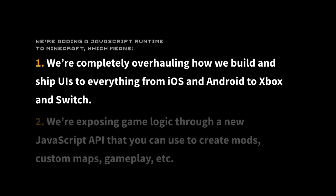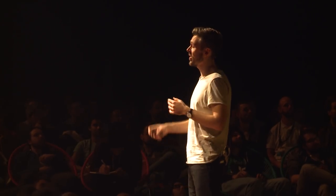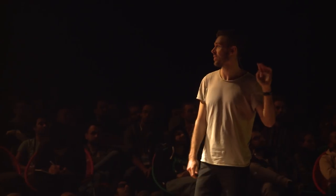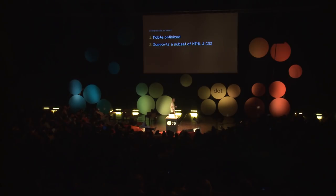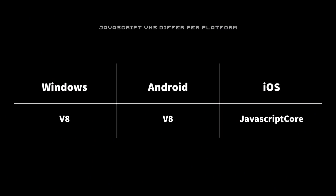Hummingbird is mobile-optimized, so it works well — that's why we picked it. It supports a subset of HTML and CSS and they're connected: they're opinionated in what they implement, but whatever they implement, they implement according to the web specs. So we have Flexbox but not Float, because Float is expensive. The JavaScript VM differs per platform — on Windows and Android we have V8, but on iOS we have JavaScriptCore. So it's basically like building another web page.